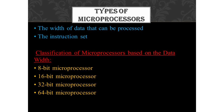Now we will see the types of microprocessors. Microprocessors can be classified based on two categories: the width of data that can be processed, and the instruction set. Based on data width, microprocessors are classified as 8-bit, 16-bit, 32-bit, and 64-bit microprocessors. A 64-bit microprocessor can access 64 bits of data at a single interval.